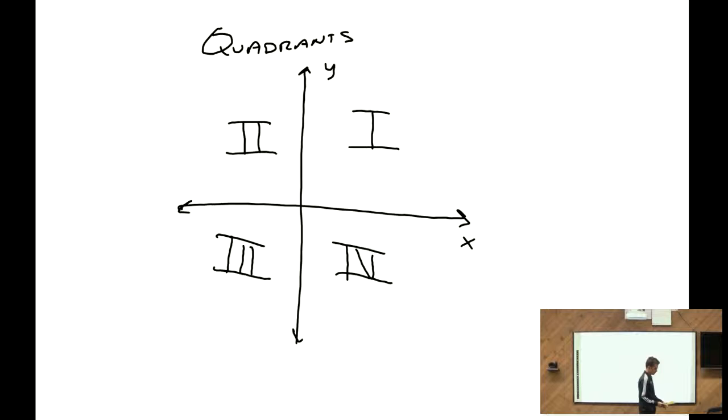And then the last thing from the section, a couple other special words, is this point right here, which would be 0 comma 0 in blue. That is called the origin. And then lastly, we kind of already went over this, but the y-axis, let's call it an axis, y-axis. And then from left to right is the x-axis.